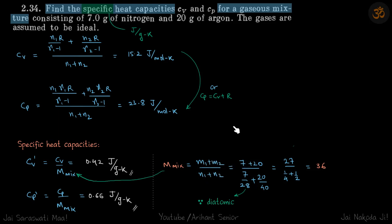So total mass is given as 7 plus 20 and total number of moles will be 7 upon 28 plus 20 upon 40. So we will just divide them by their molecular masses. So here this for the nitrogen molecule, it will be N2. Because the gas is diatomic that's why we are writing 28.